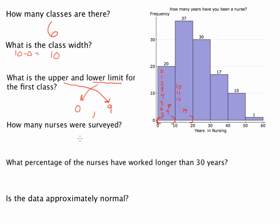How many nurses were surveyed? If we look at these columns, this is the frequency in each column. In order to answer this question, I'm just going to add up all the frequencies: 20, plus 37, plus 30, plus 17, plus 10, and plus 1. If you add up all these frequencies, we're going to get the number of nurses that were surveyed. Adding those all up, I get 115. So 115 nurses were surveyed.